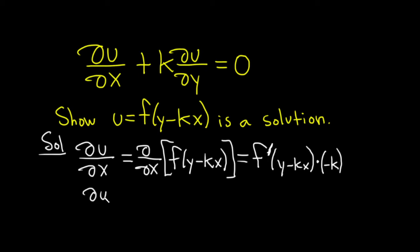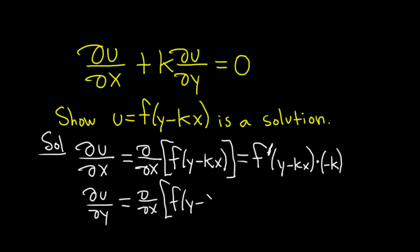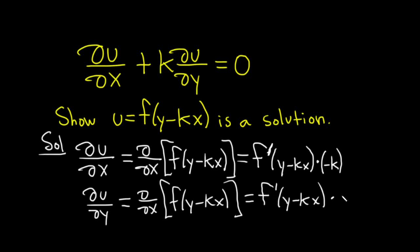Now let's compute del u del y — the partial of f of y minus kx with respect to y. The chain rule gives us f prime of y minus kx times the derivative of the inside with respect to y, which is simply 1, because the derivative of kx is 0 in a partial with respect to y.